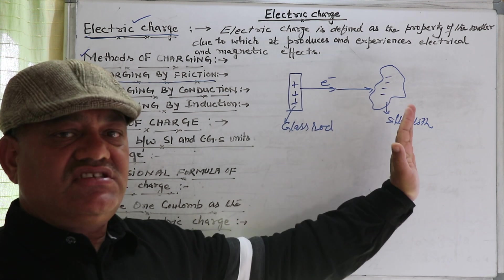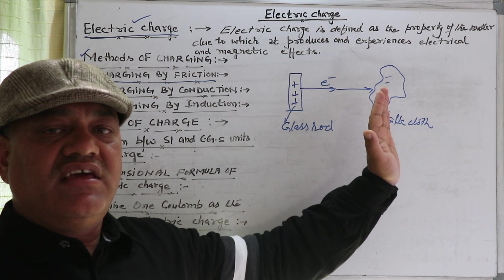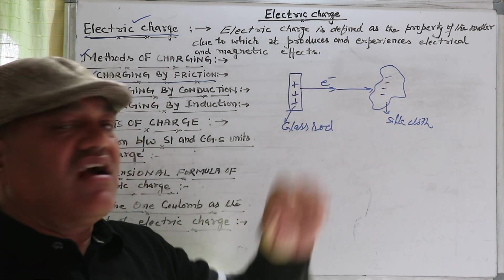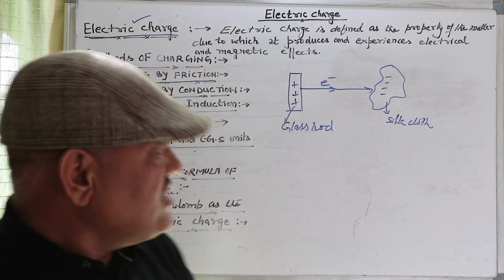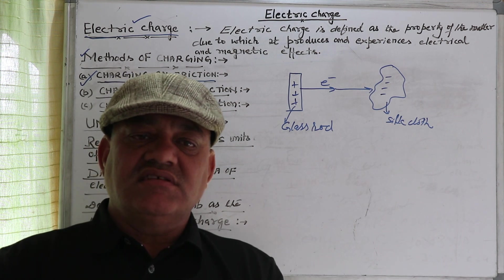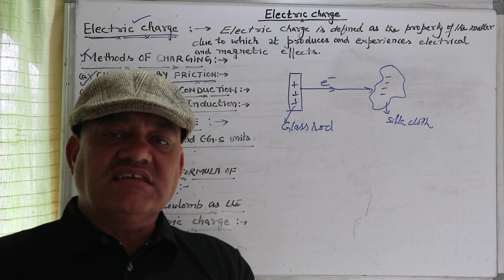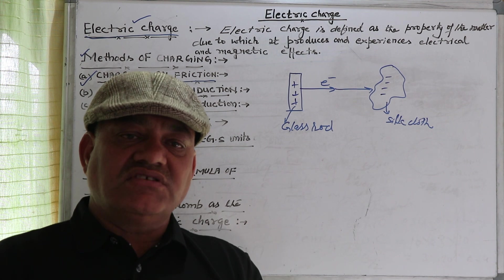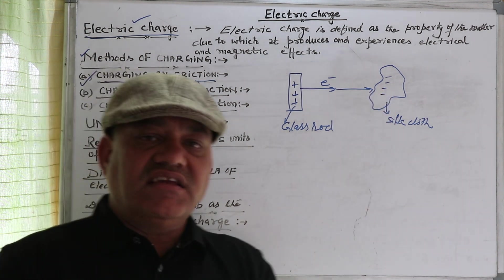In this case, the charges produced on both bodies cannot move — they are in a state of rest, and hence these charges are called static charges. Static charges cannot move because they are produced on insulating bodies, and insulators do not have charge carriers like free electrons.